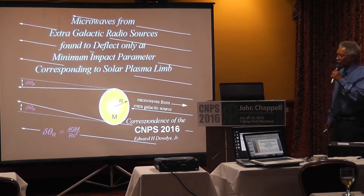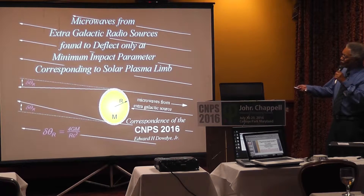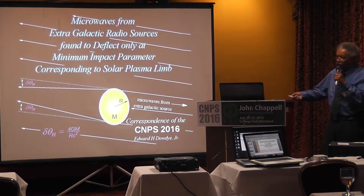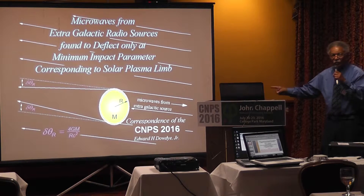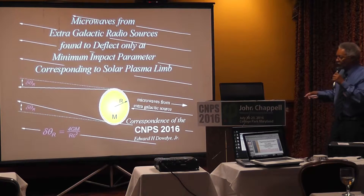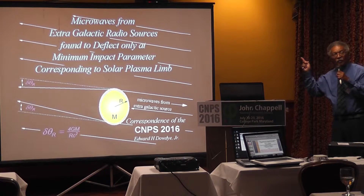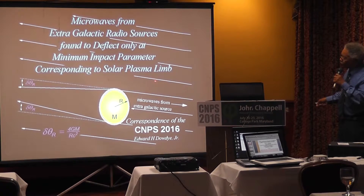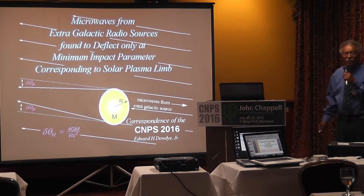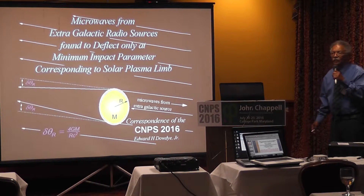These microwaves, when they come from distant sources millions of light years away, and the waves have been propagating — all the waves are parallel to one another for all practical purposes. But what happens when these waves pass by stars and the sun, they tend not to be lensed at all. That is the fact of observational evidence.